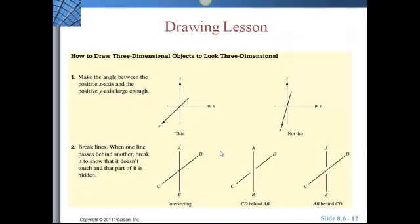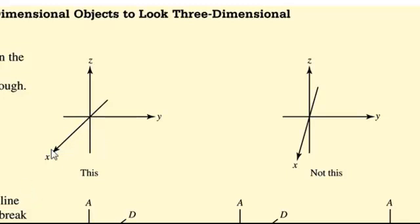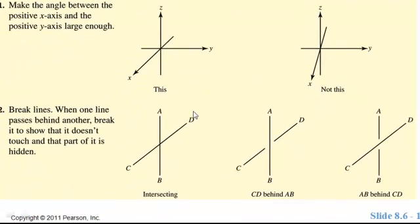Now we're going to have a drawing lesson — we'll learn to draw three-dimensional objects to look like three-dimensional objects. We need to make the angle between the positive x-axis and the positive y-axis large enough to give the feeling of three dimensions; if you make it too small, it's not as clear. When drawing two lines, we draw break lines. These two lines would be intersecting — make a small break to show that CD is behind AB, or make a break in AB to show that AB is behind CD.